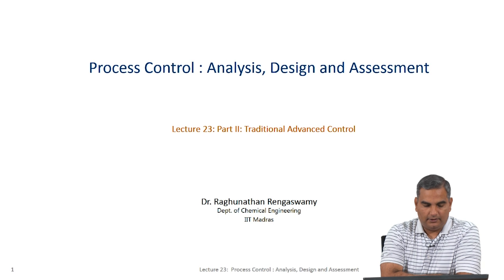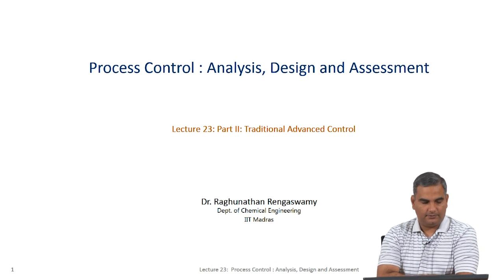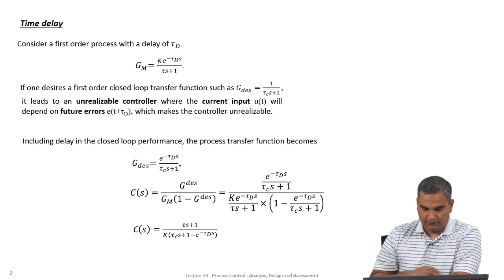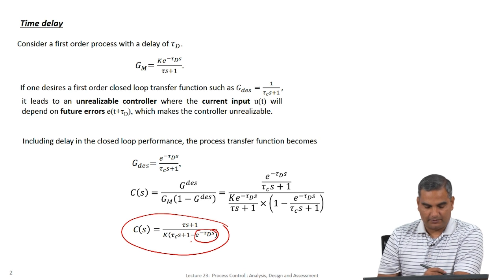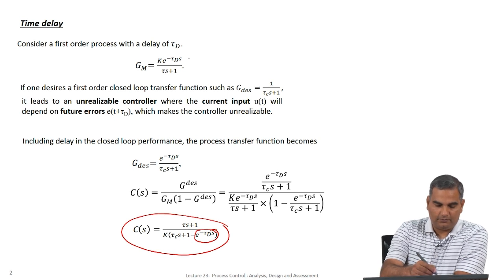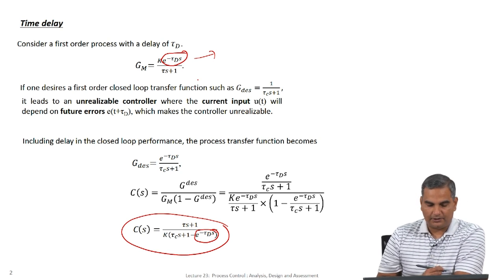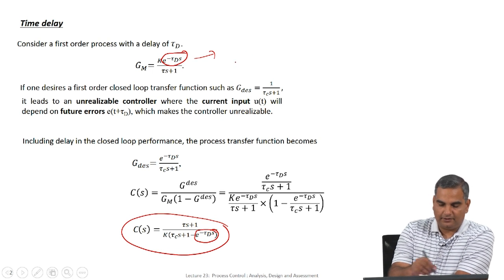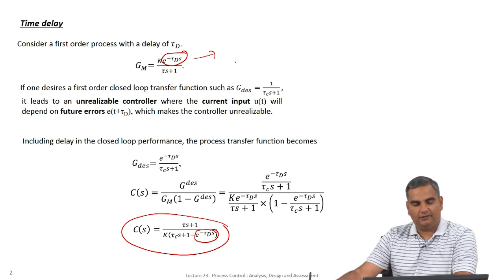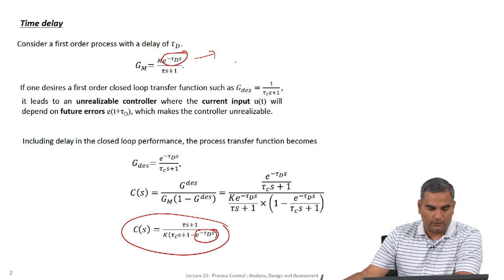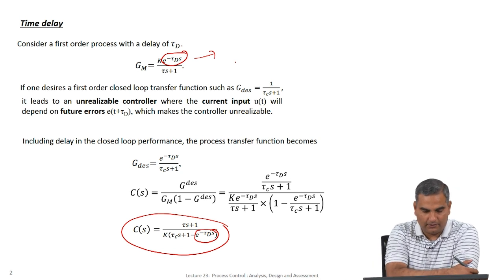Let us continue with our lectures on design of controllers for time delay systems. In the last lecture we talked about how we could start with a controller design and then convert it to a polynomial form numerator over denominator using Padé approximation, so the controller becomes numerator by denominator. Another way of saying the same thing is to convert the process model into numerator by denominator form through Padé approximation and then use standard controller design techniques. This is where we had stopped in the last lecture.